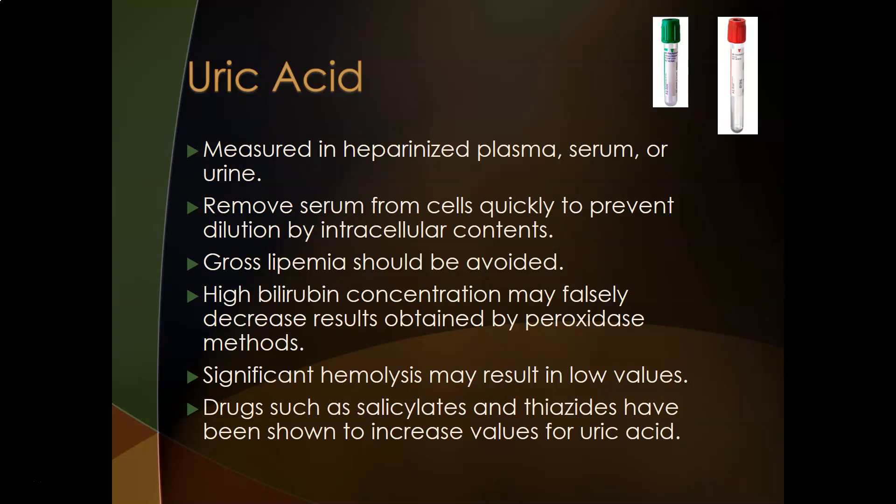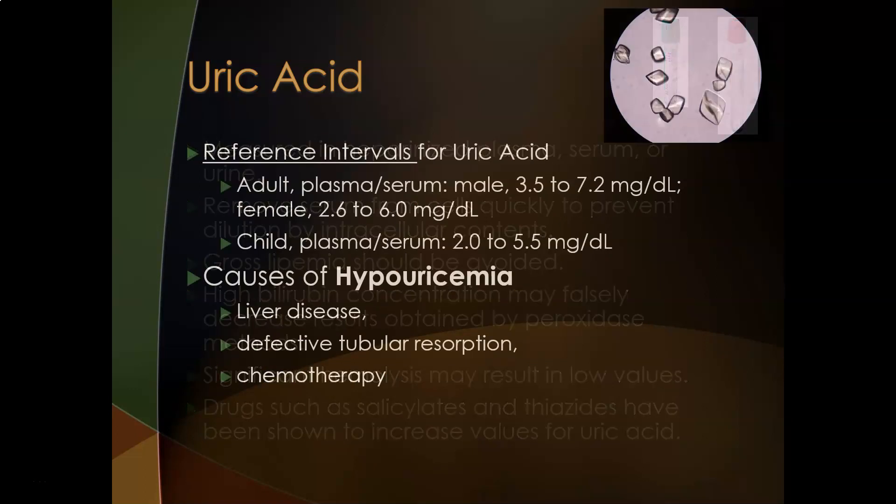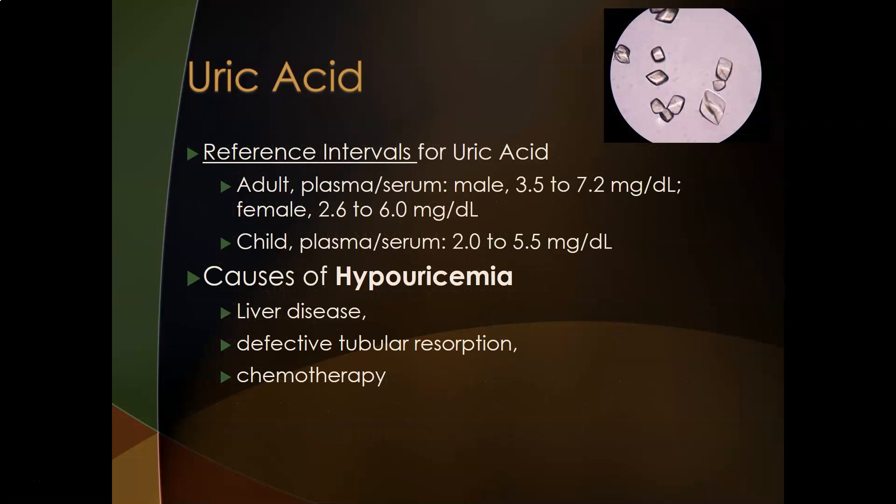Drugs such as salicylates (aspirin) and thiazide diuretics have been shown to increase uric acid values. The reference intervals for uric acid in adult plasma or serum are: males 3.5–7.2 mg/dL, females 2.6–6.0 mg/dL, and for children 2.0–5.5 mg/dL.